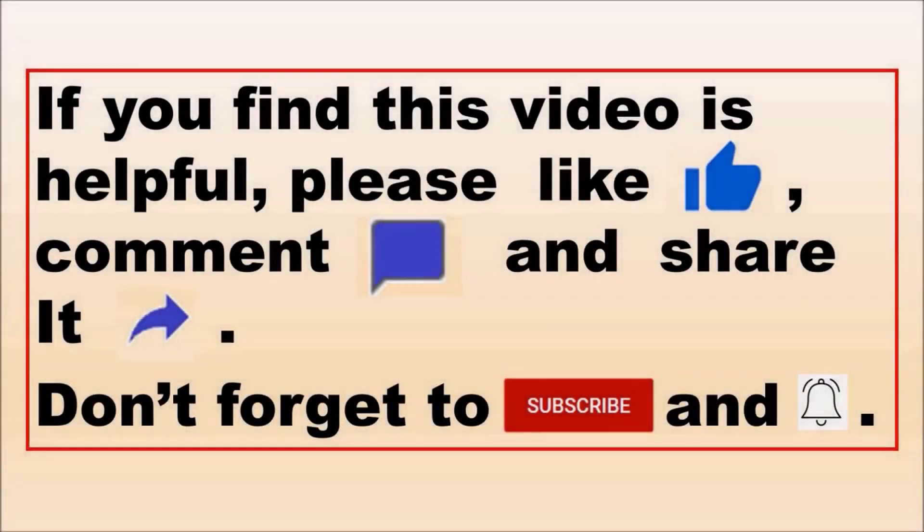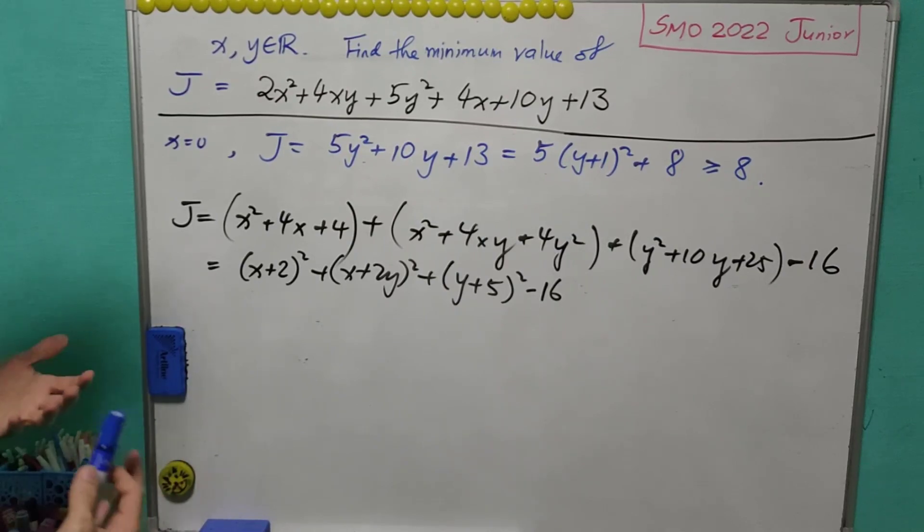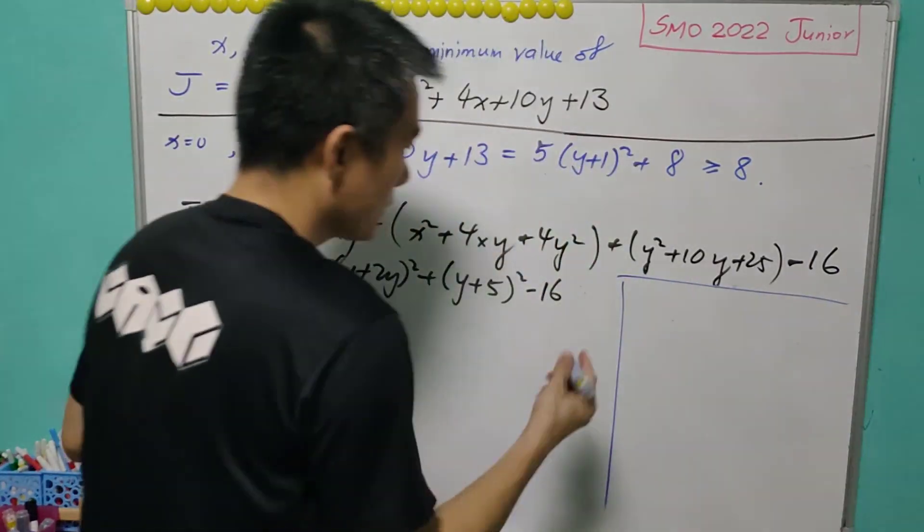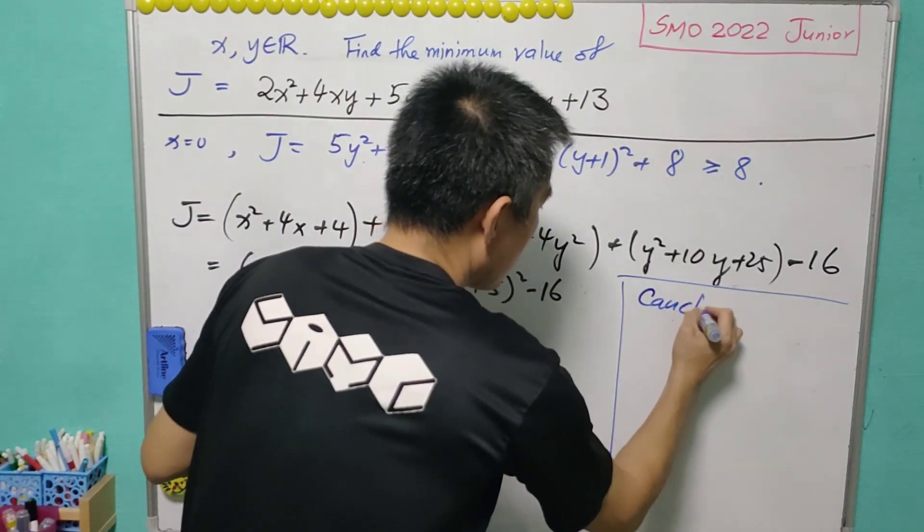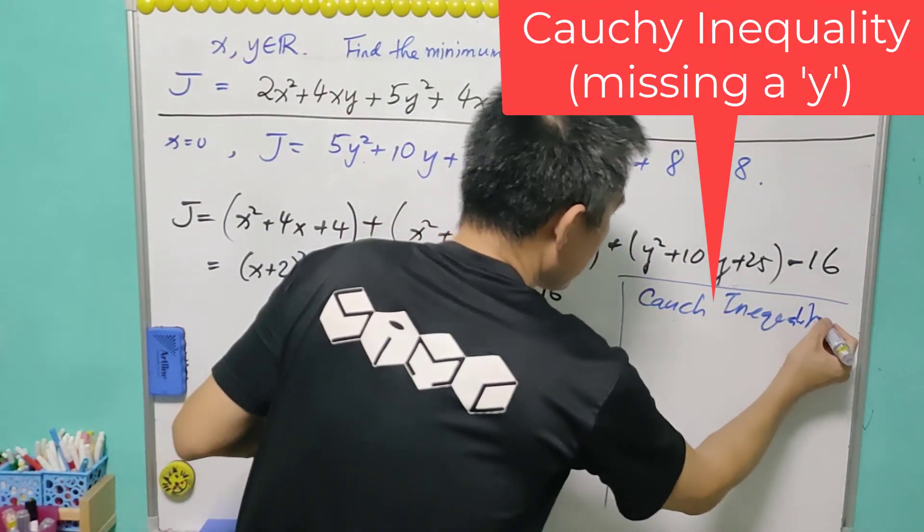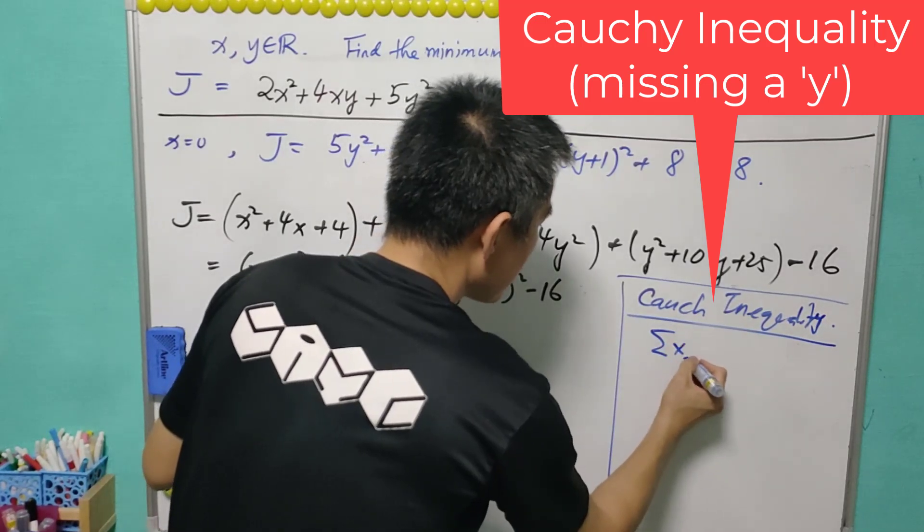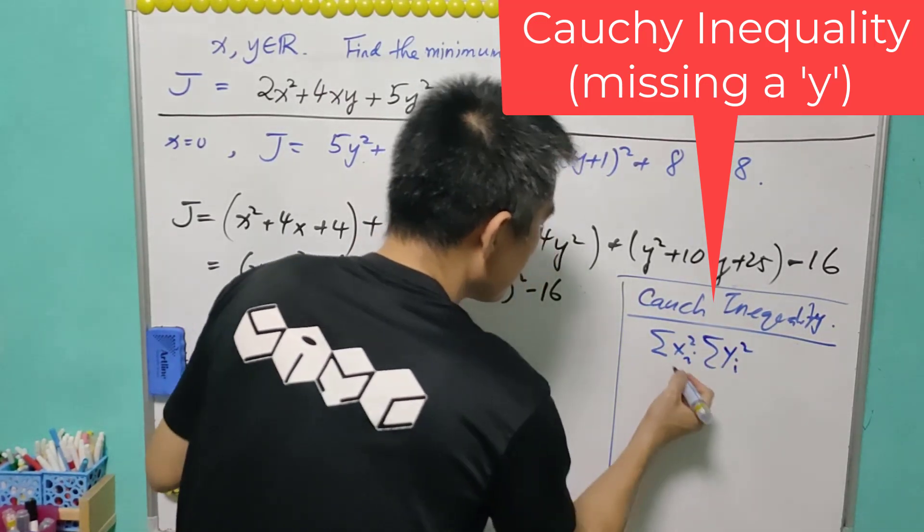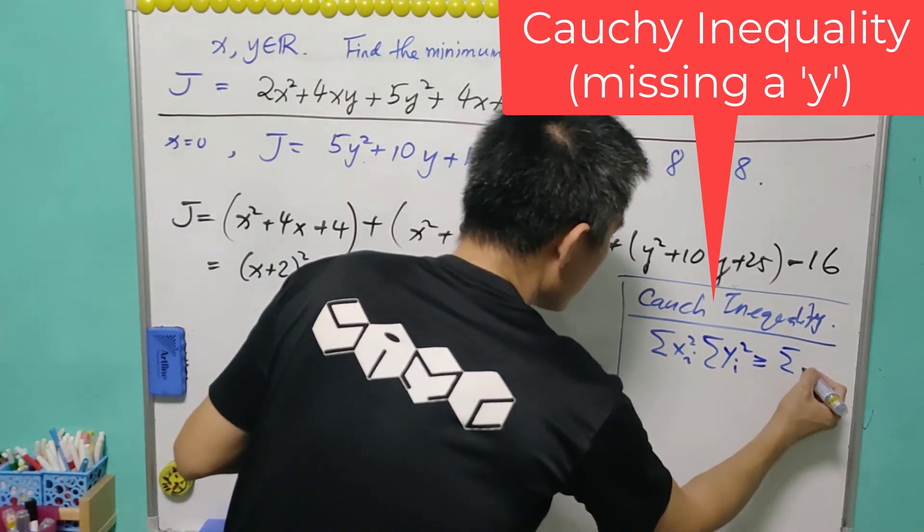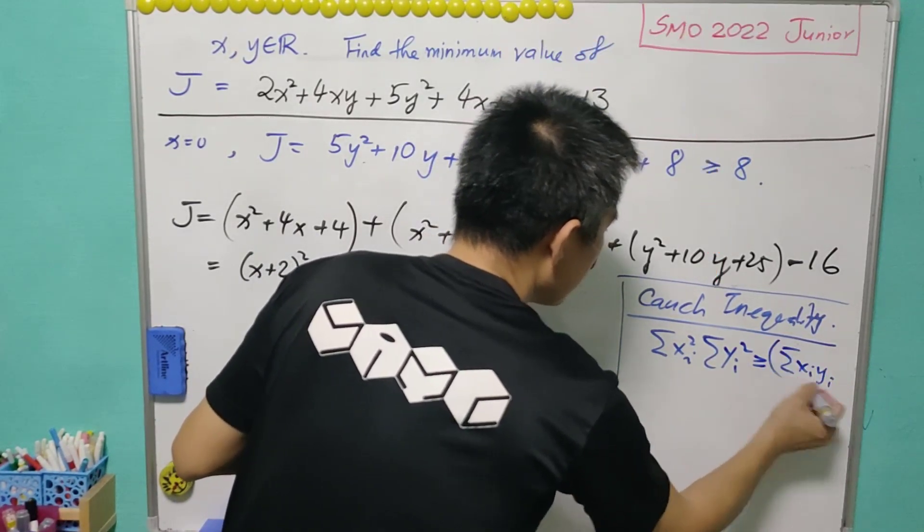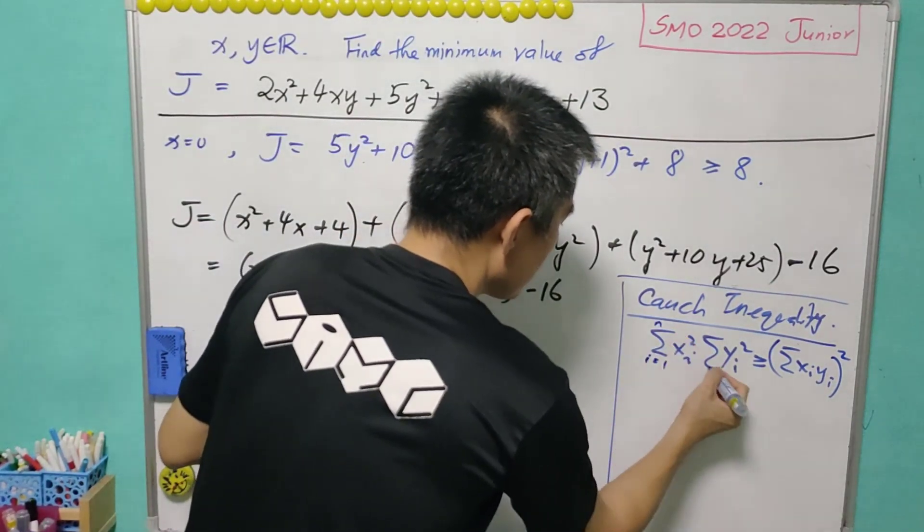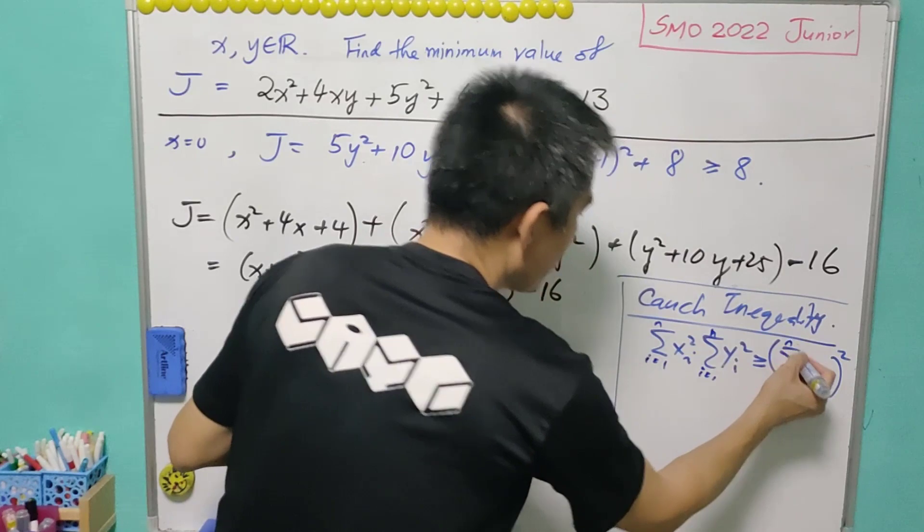If you enjoy this video, please like, comment, and subscribe. So we need to use a result from Cauchy inequality. So Cauchy inequality says that summation xi squared, summation yi squared, greater than equals to summation xi yi, the whole thing squared. Each of these is i from 1 to n, i from 1 to n, i from 1 to n.